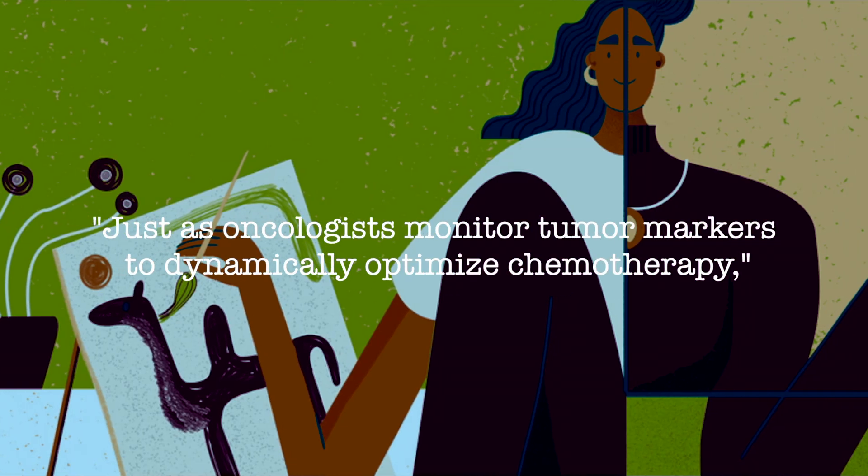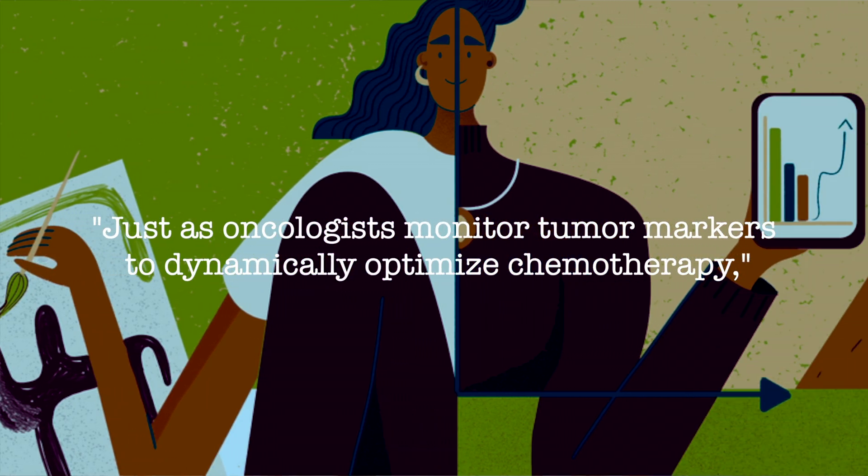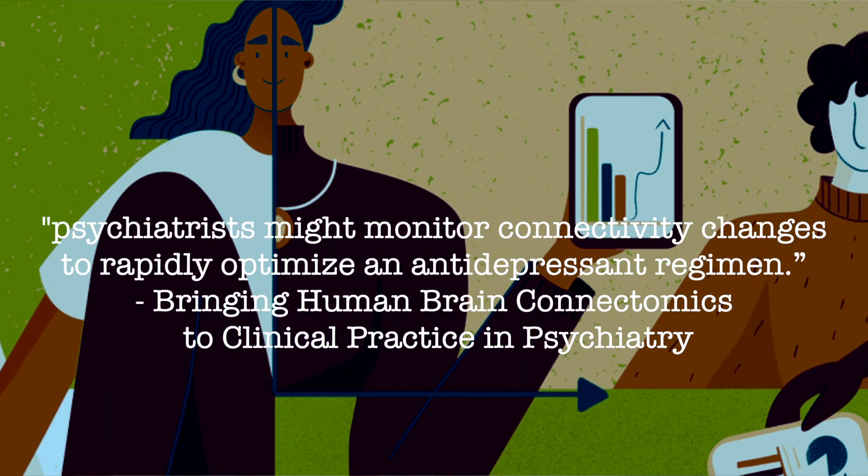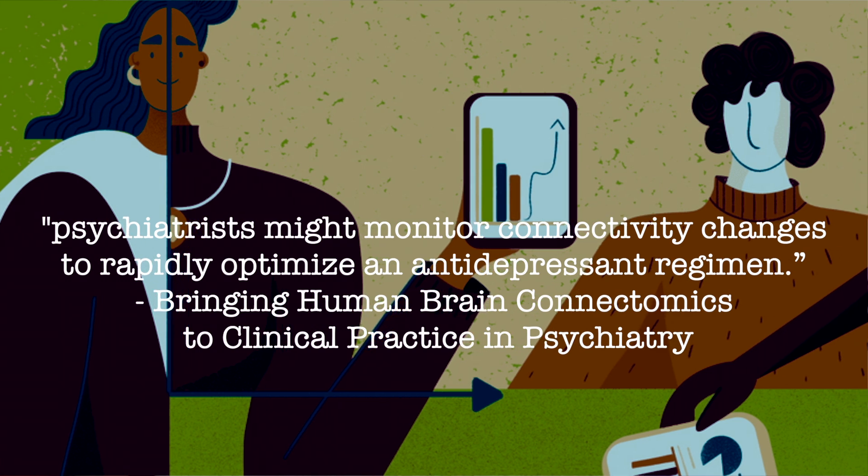The goal of computational psychiatry is to gain deeper insight into the biological, physiological, and environmental factors that contribute to mental disorders and to develop more effective and personalized treatments. A big difference from computational neuroscience is the emphasis on patients and clinicians — instead of modeling the mean of a distribution, we want to understand people on the edges. Just as an oncologist monitors tumor markers to optimize chemotherapy, a psychiatrist might monitor brain connectivity changes to optimize an antidepressant regime. This type of personalized medicine is not yet available, but it is a key goal.